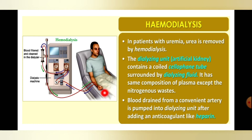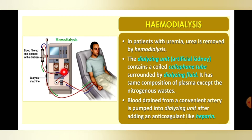Blood is drained from a convenient artery and pumped into the dialyzing unit. They use any one artery from the body, usually in the arm. The blood coming out of the patient's body through the artery is pumped into the dialyzing unit, and after purification it is sent back to the patient's body, after adding an anticoagulant.